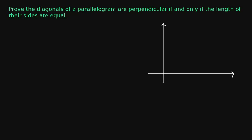Here we have a proof to do. We need to prove that the diagonals of a parallelogram are perpendicular if and only if the length of their sides are equal. The first thing I want to do is get some intuition about what we're actually trying to prove and write a mathematical statement. So I'm going to draw a parallelogram to see what's going on. Here are two vectors, u and v, and we know we can make a parallelogram out of them.